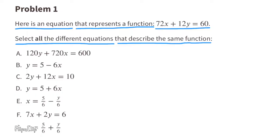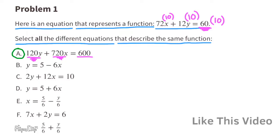A. Let's look at the term on the right side of the equal sign. It's 600. Compared to the original equation, that term used to be 60, so it's actually 10 times bigger. Look at the y term: it went from 12y times 10 and became 120y. And the x term went from 72x to 720x. It was multiplied by 10, so all three terms were multiplied by 10. All the terms that were on the left side remained on the left side, and all terms on the right side remained on the right side.